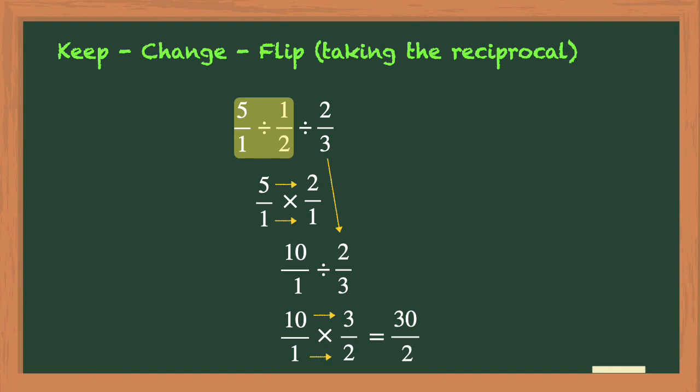The last step is to simplify your product, because 30 over 2 is an improper fraction. So you will need to divide the numerator of 30 by the denominator of 2. And 30 divided by 2 is a whole number of 15.